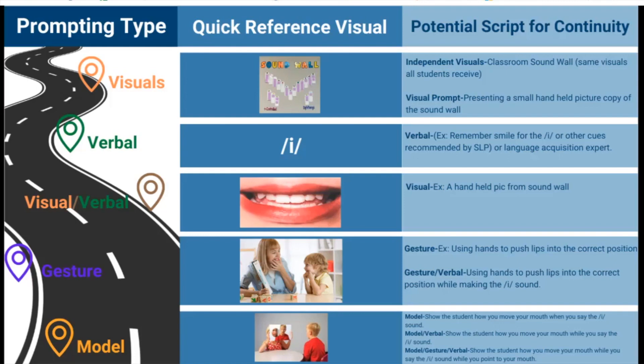If there is an expectation for the reader to produce sounds, we have to consider these articulation difficulties. We also want to remember that the goal of a reading program is learning to read. Difficulties with articulation need to be accommodated, and alternative means of sound production should be considered. We have to think about using visuals and providing models when prompting.